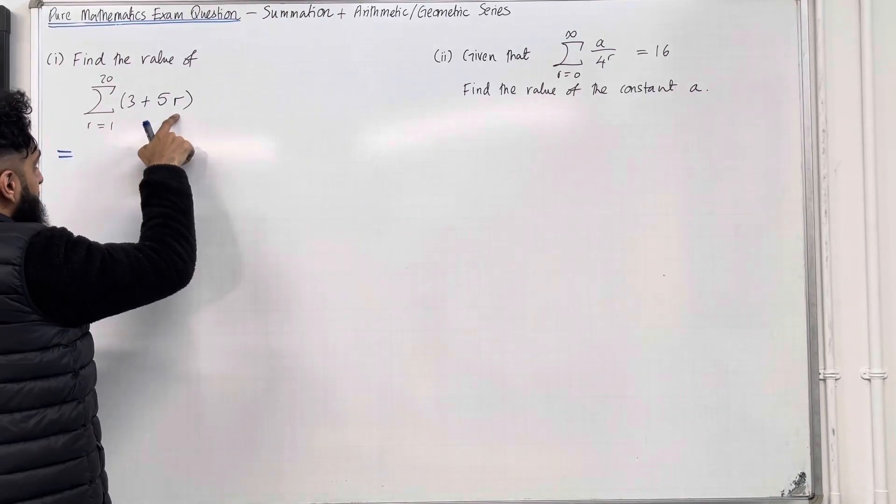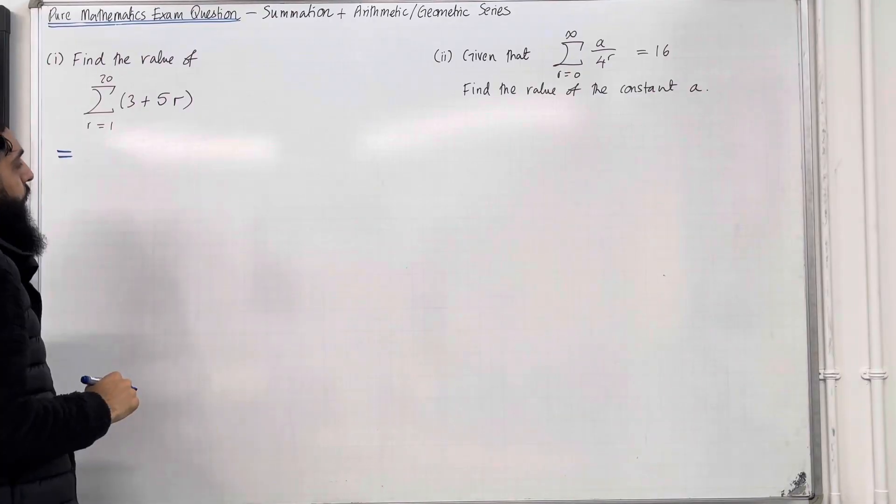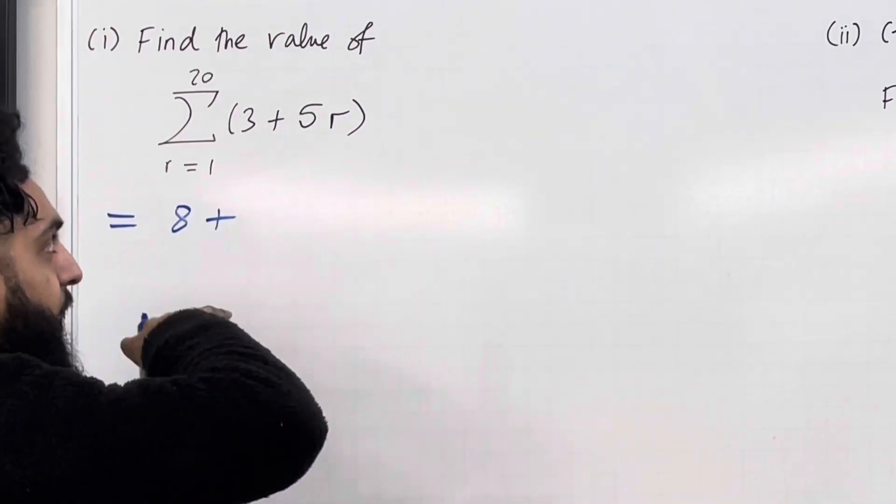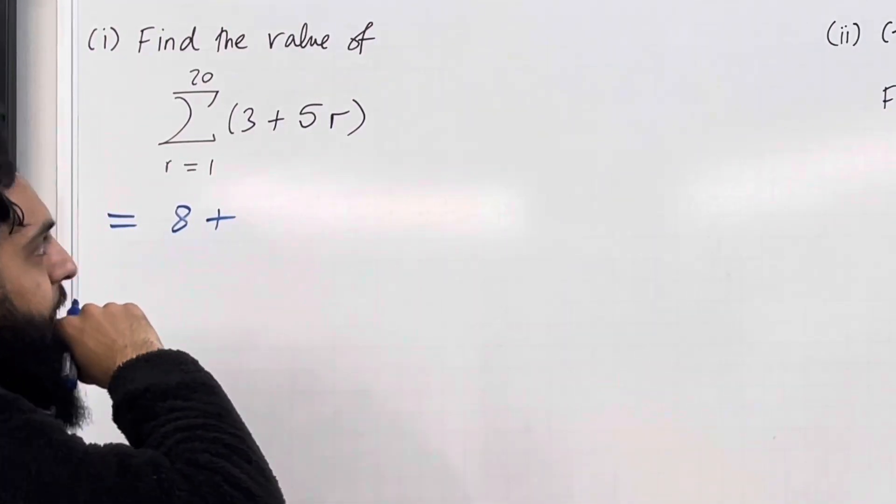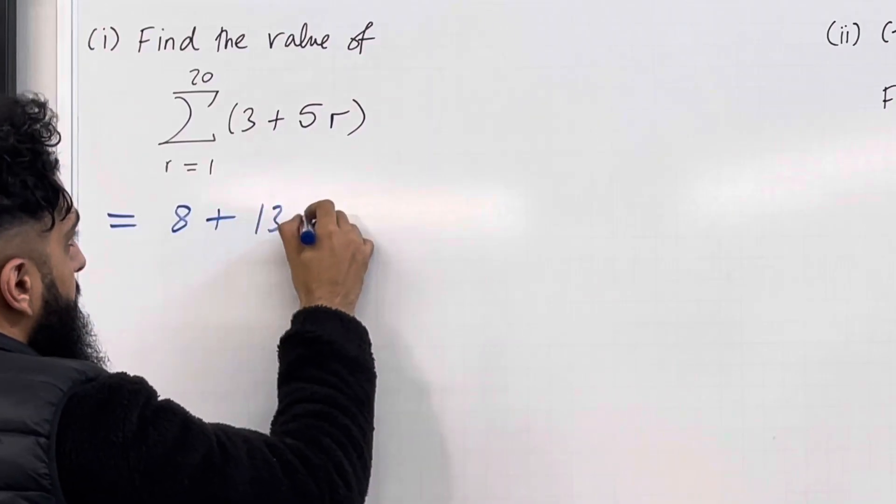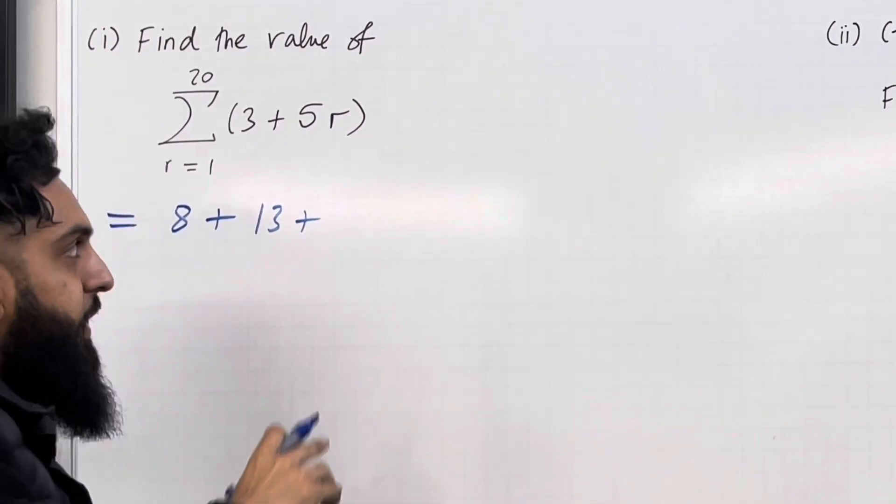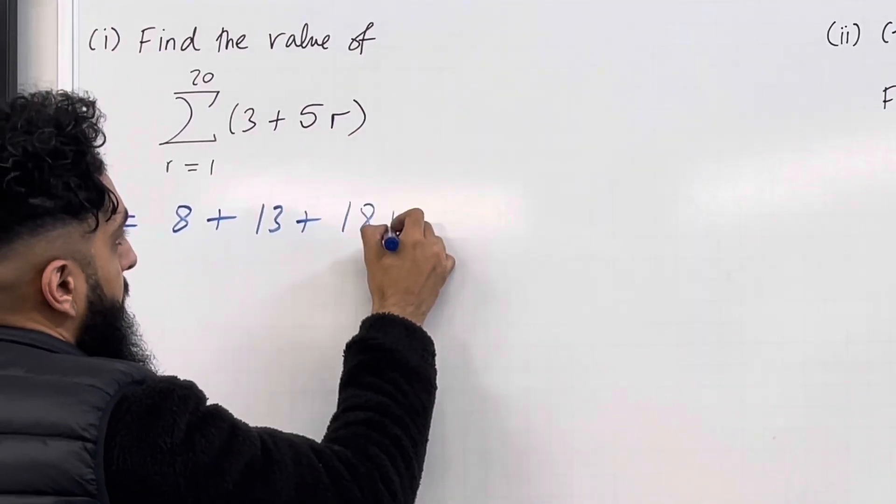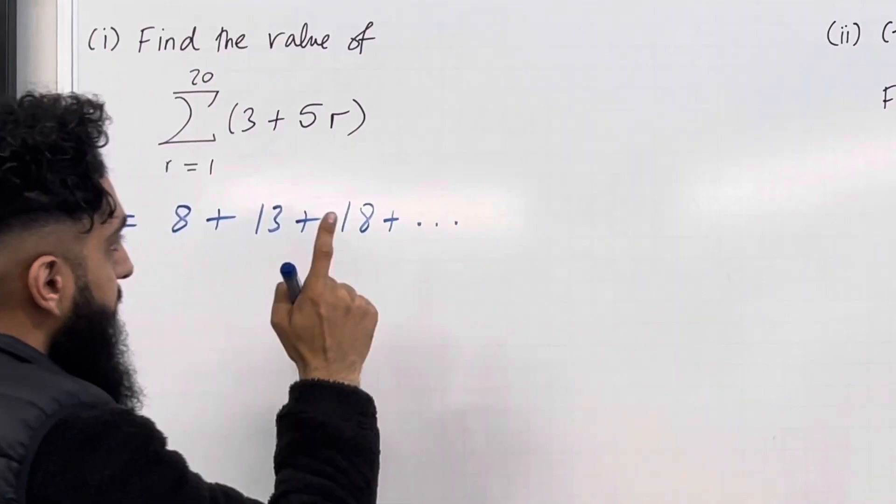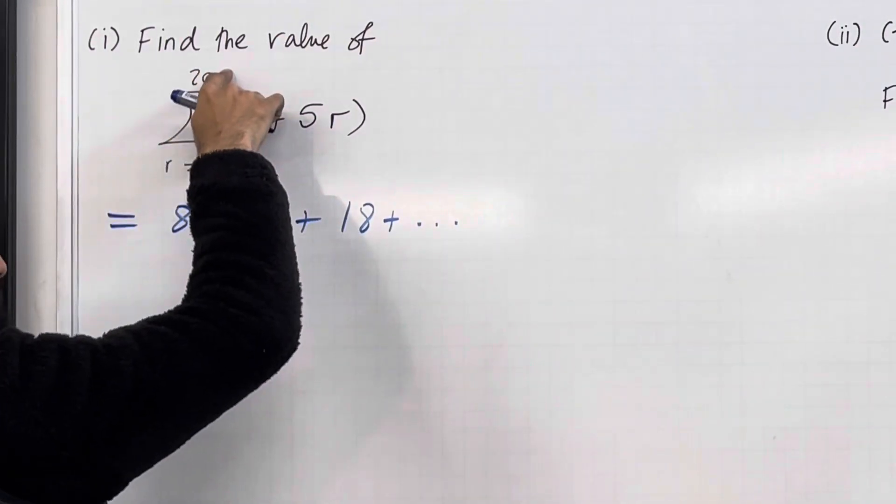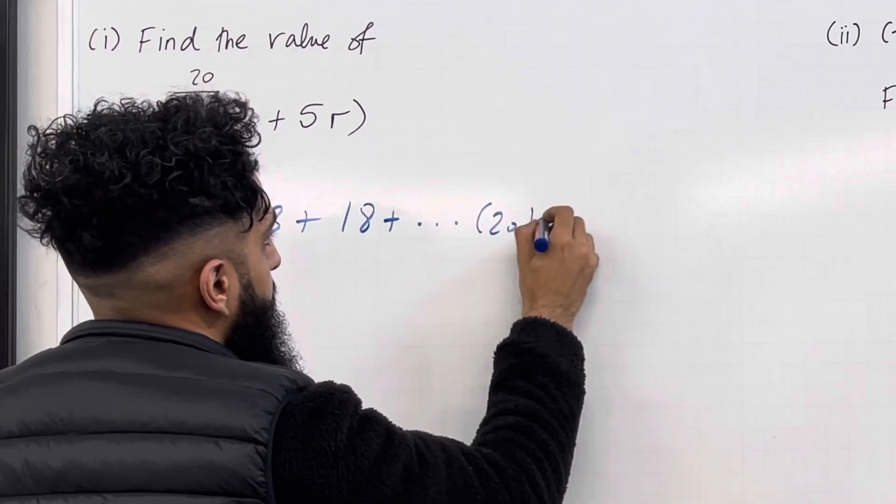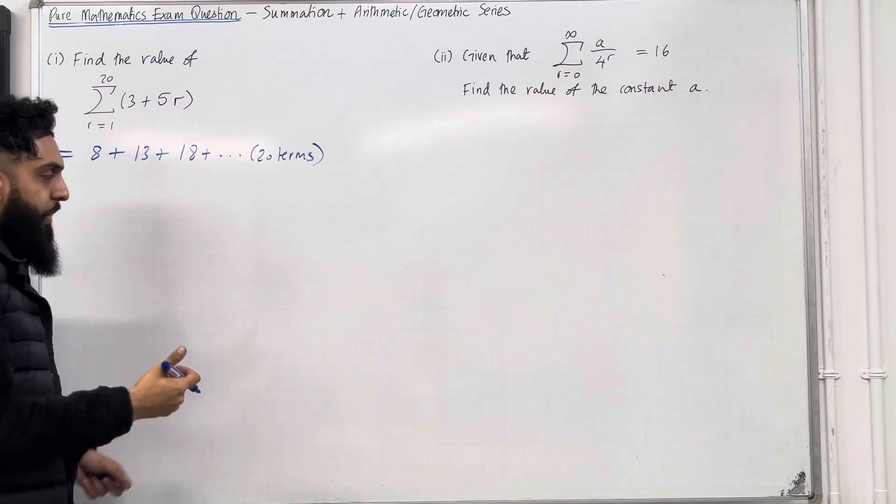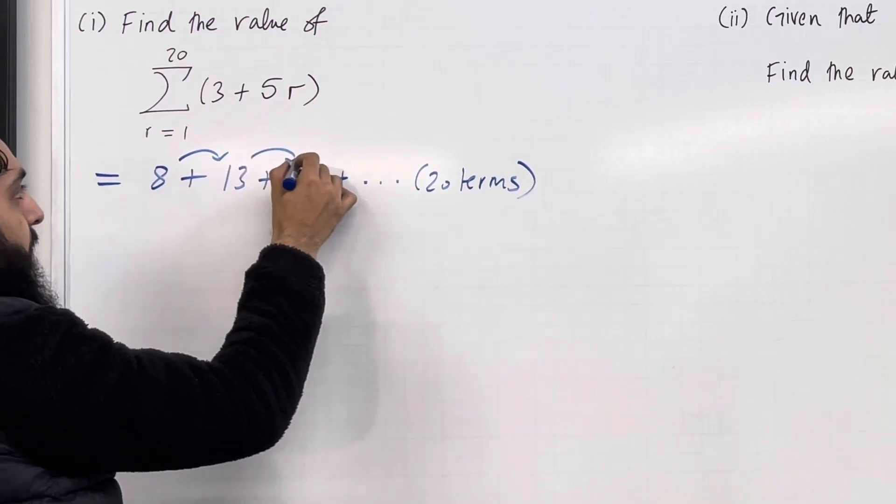We can substitute r equal 1 into this expression to generate the first term. So 3 plus 5 times 1 is 8. Plus substitute r equal 2 into this expression to generate the second term, so we've got 5 times 2 is 10 plus 3 is 13. Substitute r equal 3 to generate the third term: 5 times 3 is 15, 15 plus 3 is 18. We're going to sum up from the first term up until the 20th term, so we're looking at 20 terms in total. Ladies and gents, over here we have an arithmetic series because there is a common difference. Each time we're adding 5.